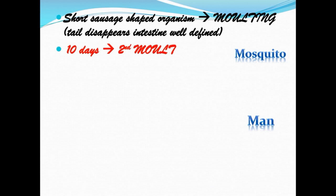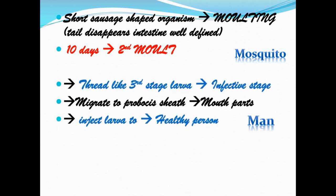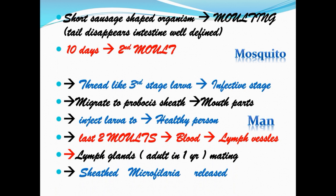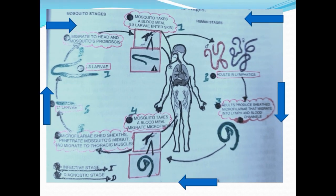After 10 days, the larva undergoes a second molt, and a thread-like third stage larva is formed, which is the infective stage. This infective stage larva then migrates to the proboscis sheath and mouth parts of the mosquito. The mosquito then injects the larva into a healthy person. The last two molts take place in the blood and lymph glands, where it becomes adult in one year, and after mating, sheath micro filarial larvae are released. Two molts take place in the mosquito and the last two in humans.